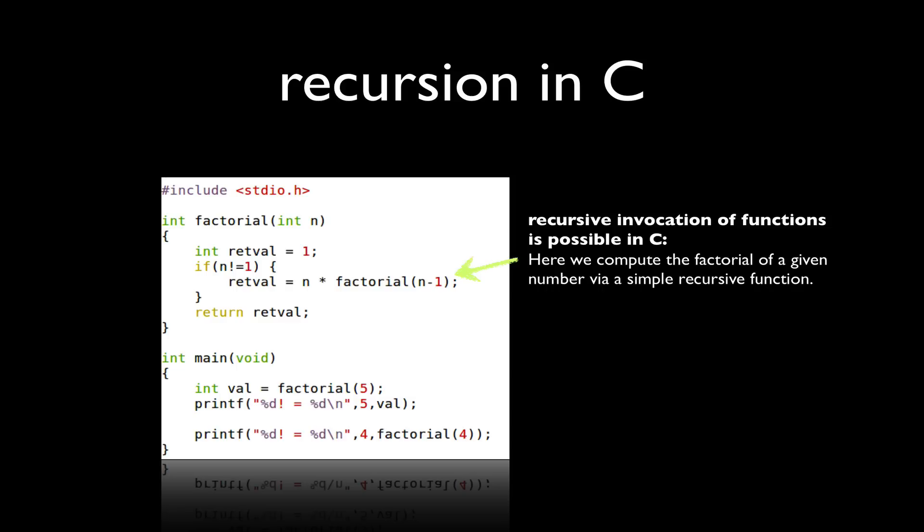So when we look at my main routine and I call factorial 5, what in fact happens is I get the value 5 times 4 times 3 times 2 times 1, which by definition is the factorial of 5.